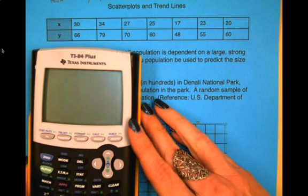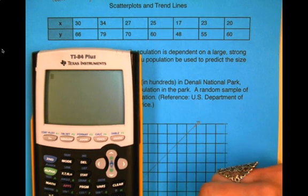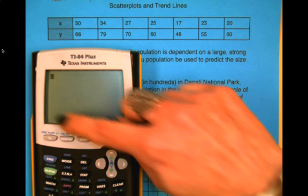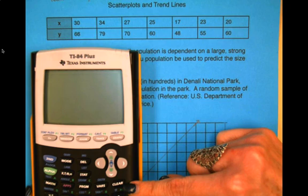So the first thing we are going to do on our calculator is go to the home screen, and this is the home screen. We can hit clear if there is anything on there.